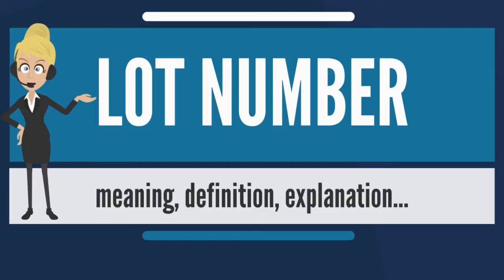A lot number is an identification number assigned to a particular quantity or lot of material from a single manufacturer. Lot numbers can typically be found on the outside of packaging.